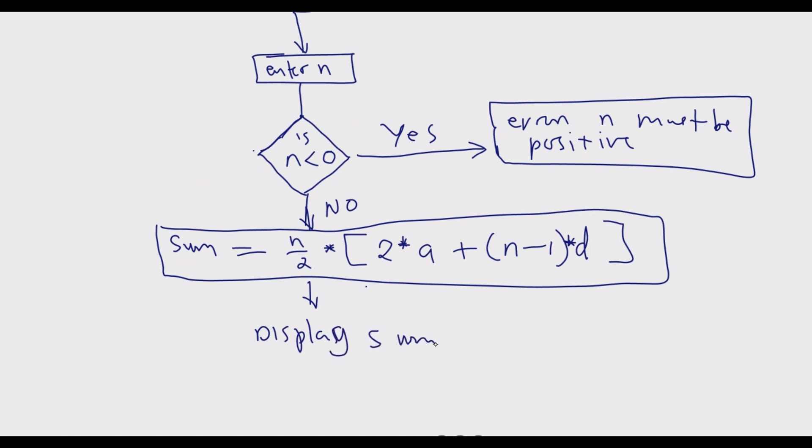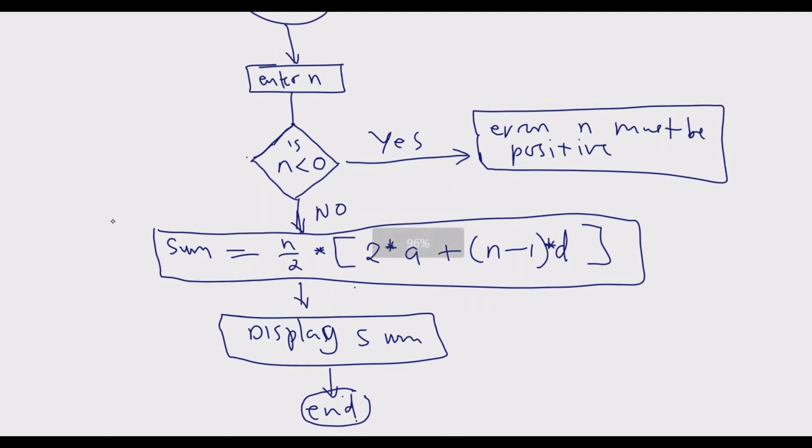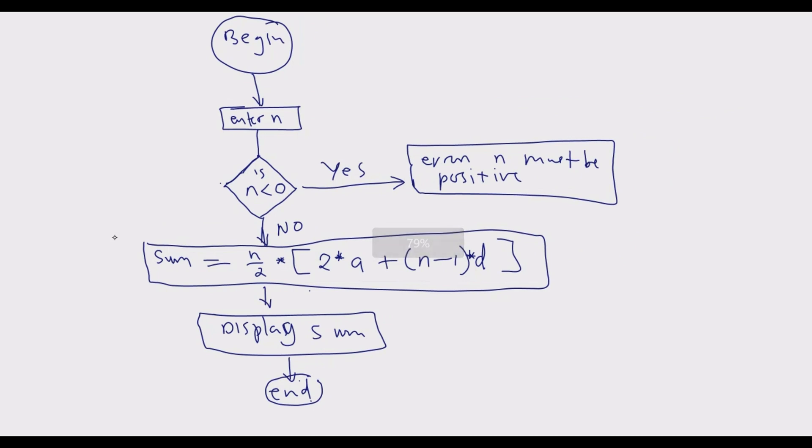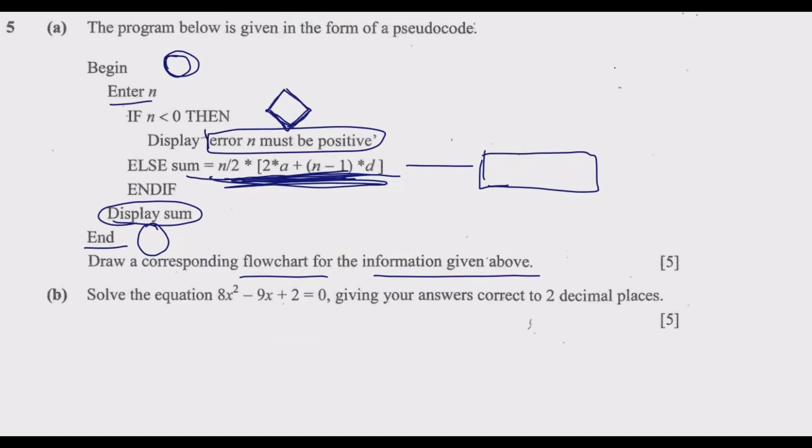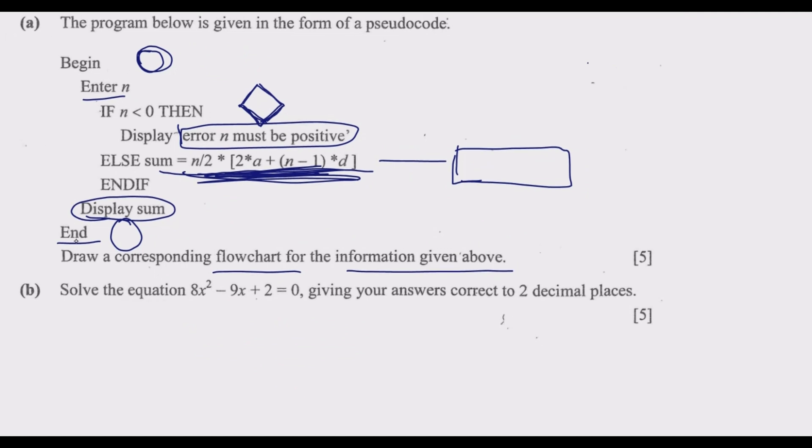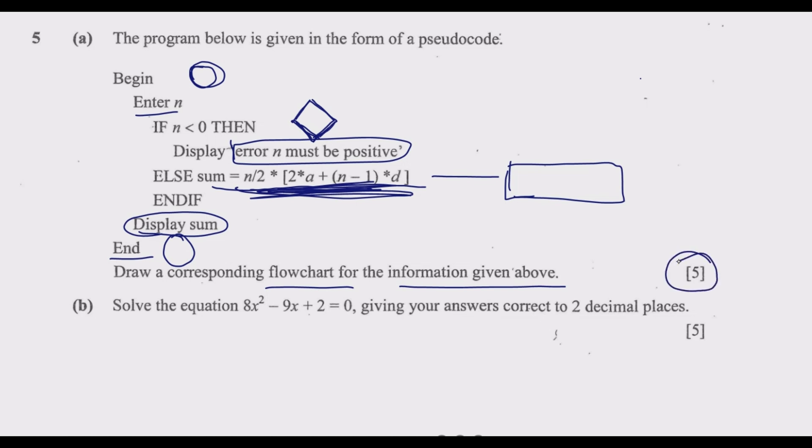We need to end the program with the circle shape. This is how the flowchart will look for this question to get the full five marks. Take note of the shapes: beginning is a circle, closing is also a circle, condition uses parallelogram, calculation uses rectangle.